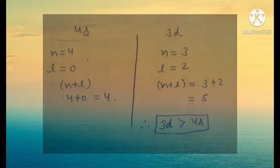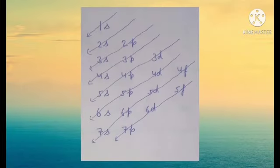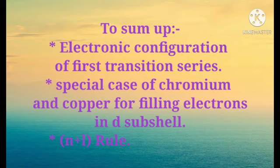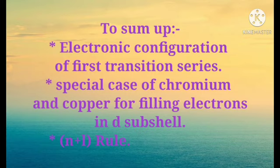So students, whenever we need to determine the order in which electrons fill subshells, we use the N+L rule sequence. The filling sequence we follow is derived from this rule. To summarize this video: we learned about the electronic configurations of the first transition series, the special cases of Chromium and Copper for stable electronic configurations, and the N+L rule to describe the energy level of each subshell.